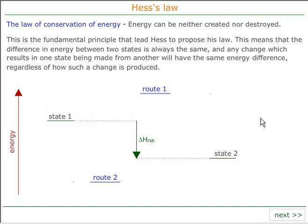Hess's Law is really just a statement of the law of conservation of energy — that energy cannot be created or destroyed. What Hess says is that if you have one state, state 1, and you wish to go to state 2, it doesn't matter which route you take to get there; the energy change will always be the same.